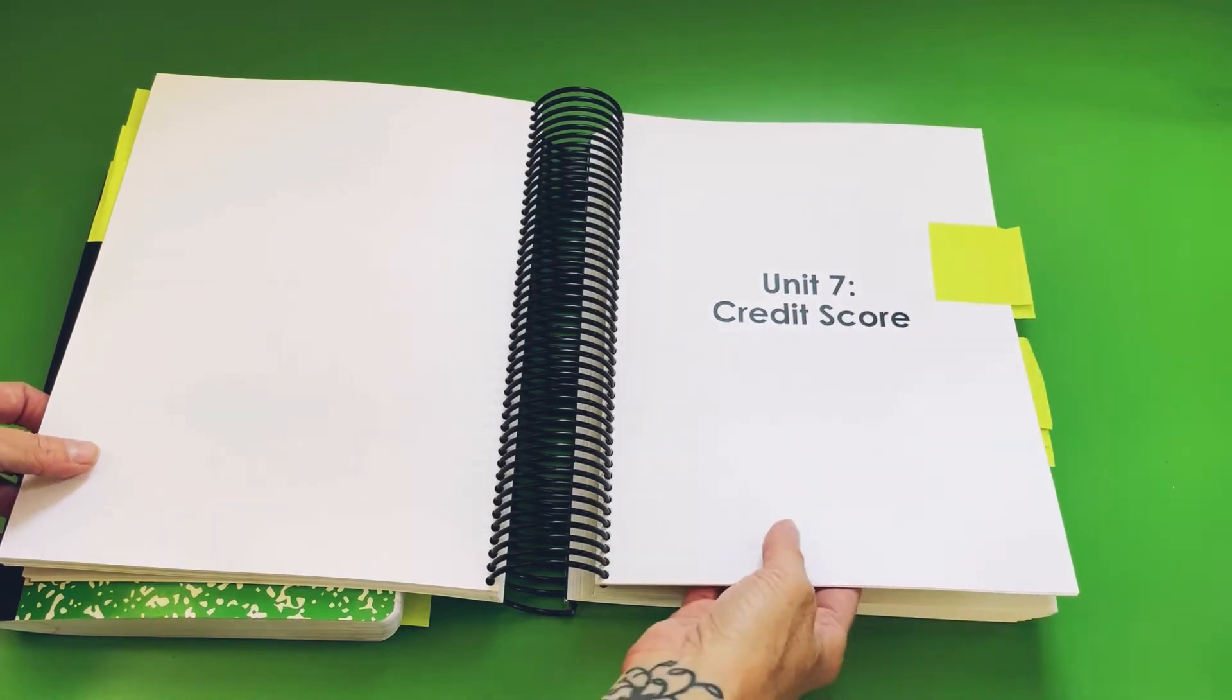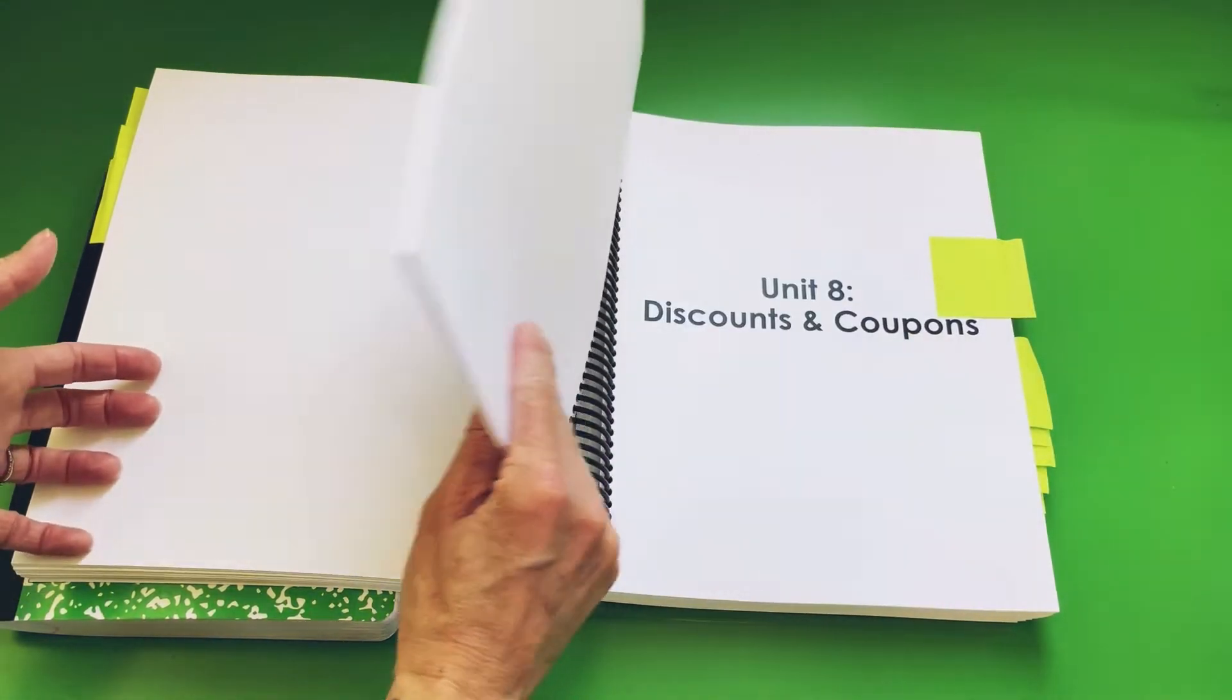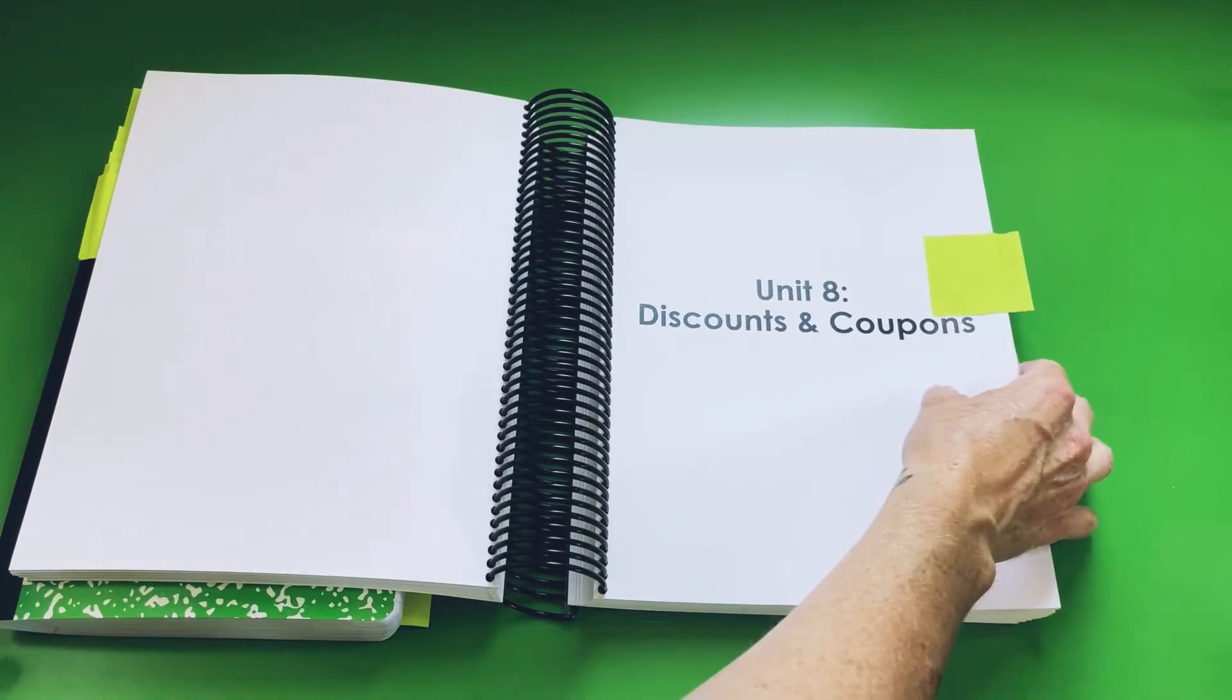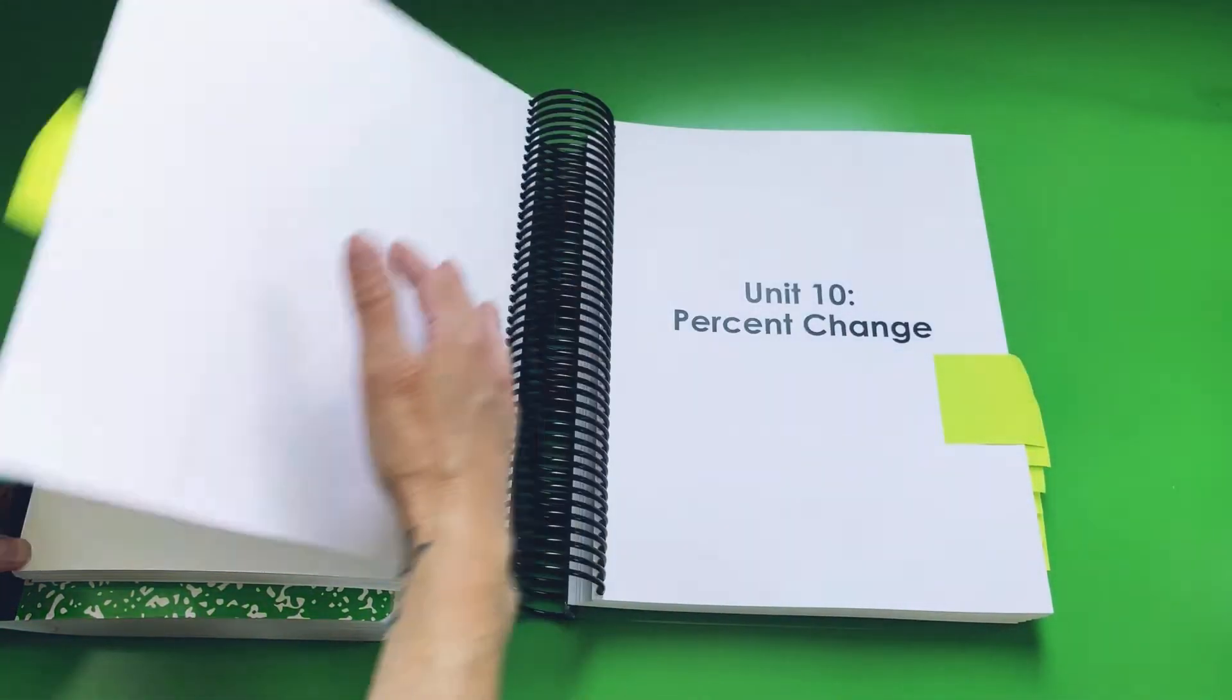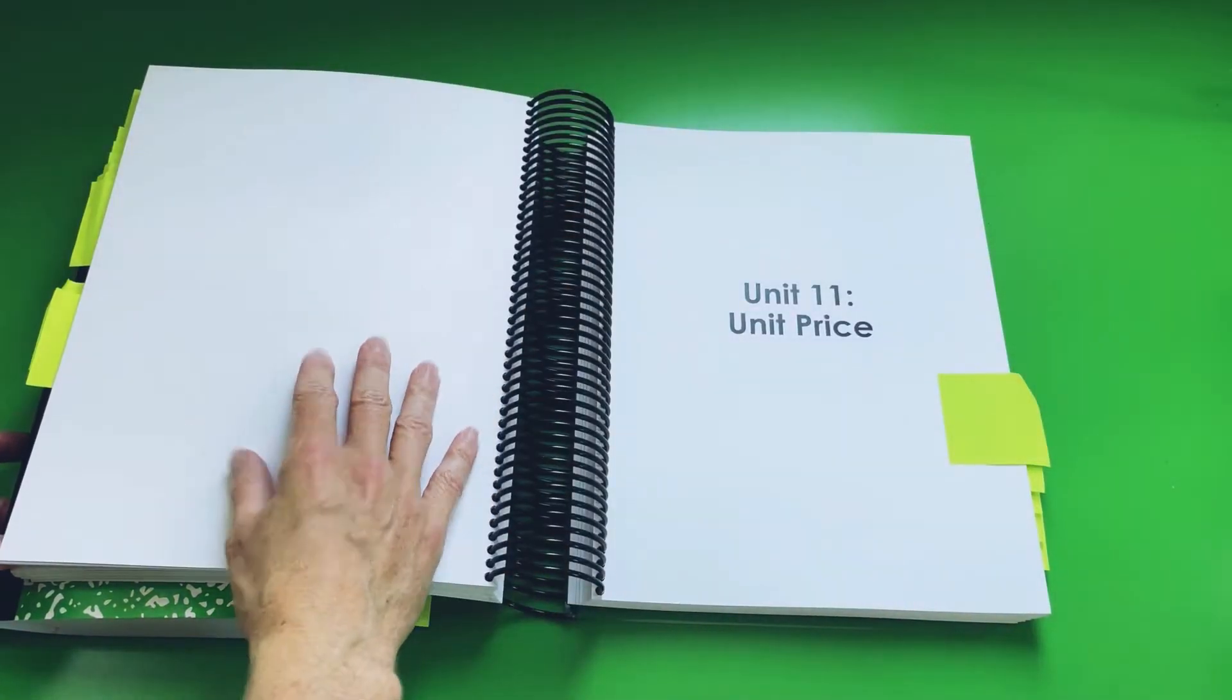When I taught consumer math all my students wanted to know what a credit score was so I put that in here. Discounts and coupons. Sales, tax and tip. Percent change. Unit price.